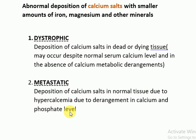Derangement in calcium and phosphate levels can result from primary hyperparathyroidism, adenoma of the parathyroid gland, malignancy, or immobilization as in bedridden patients. In all these cases there is hypercalcemia, and because of this, calcium is deposited in normal tissue — either through increased mobilization from bones or increased absorption from the intestine, as in hypervitaminosis D or excessive milk intake.